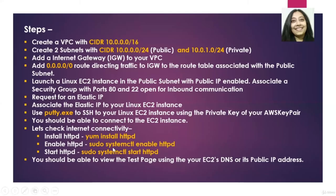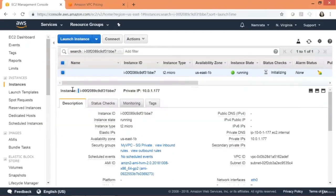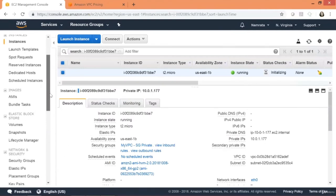Let's switch back to our diagram. We have provisioned the public EC2 instance and also provisioned an EC2 instance in our private subnet. The next thing is to provision the NAT gateway and associate an elastic IP address to it, then change the private route table to add a route to the NAT gateway.